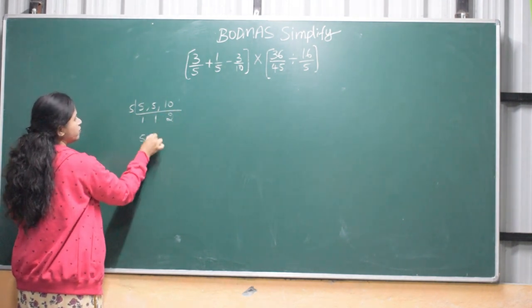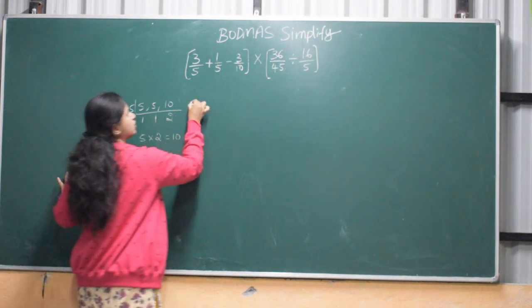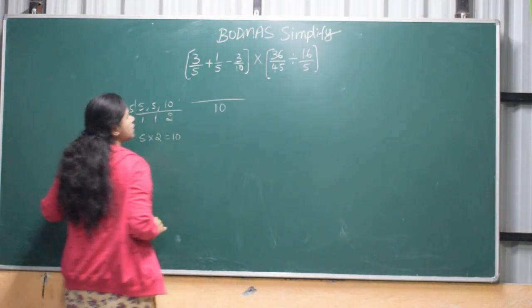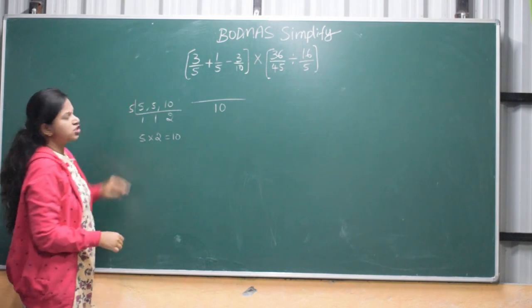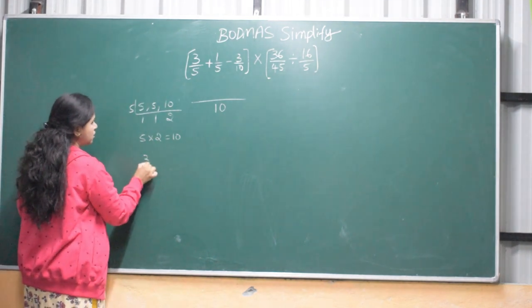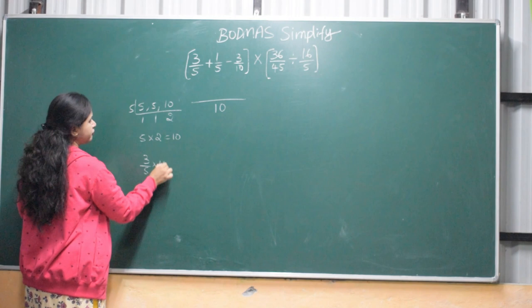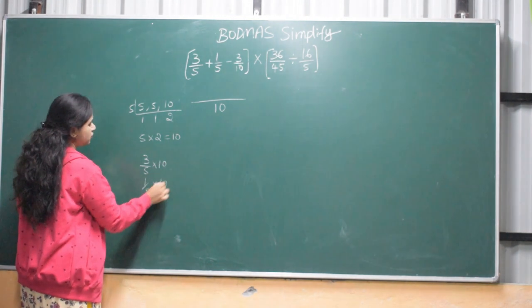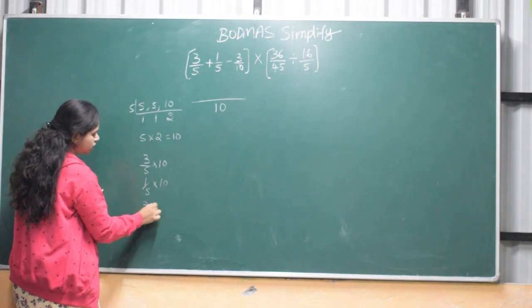5 into 2, 5, 2 is 10. 10 LCM. We have the same thing, if we have the same thing. 2 by 5 into 10, 1 by 5 into 10, 3 by 10 into 10.